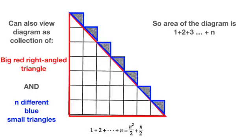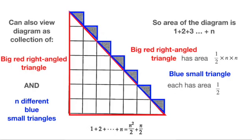If we try to sum the area in another way, this time by breaking it down to the big red right angle triangle and n blue small triangles, we see that the area of the big red triangle is given by half n square since its side lengths are n, while each of the blue small triangles has area 1 half.